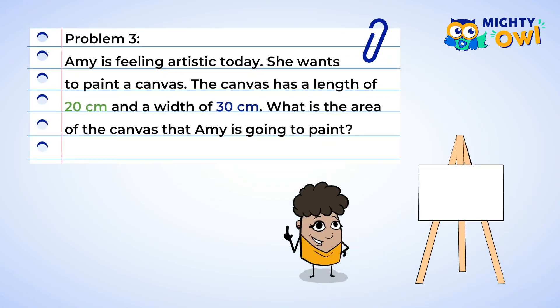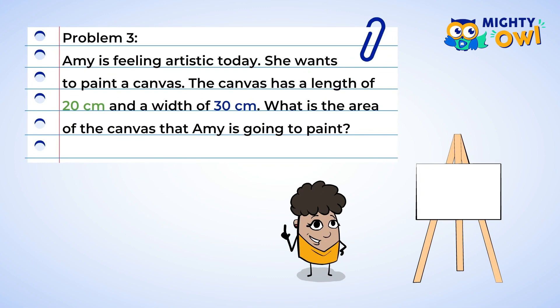Amy is feeling artistic today. She wants to paint a canvas. Huh, I guess it's just a painting kind of day. The canvas has a length of 20 centimeters and a width of 30 centimeters. What is the area of the canvas that Amy is going to paint? Well, just like the last few problems, we need to identify the length and the width of the rectangle. The length is 20 and the width is 30.